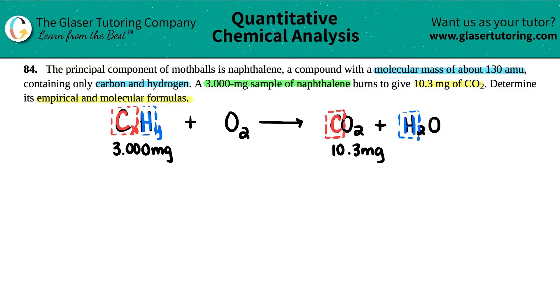So basically what we can do is, because they told us how much CO2 was made, I can find out how much individual carbon was made. And I can say that's how much carbon I have in my naphthalene compound. So basically with this type of question, the first thing you have to find out is the grams of the carbon and the grams of the hydrogen independently.